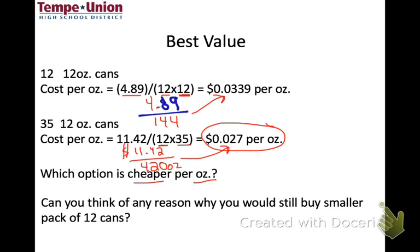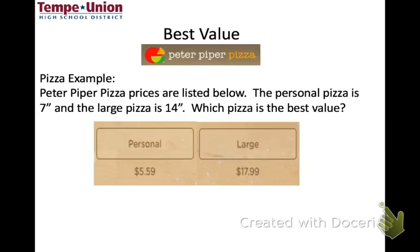Can you think of why you might still want to get the 12-pack? There could be a number of reasons — you might not have the storage space, you might not need that many right now, or you just might not have enough money to get the bigger pack, even though it's cheaper per ounce. The bigger one is a better deal, but there are valid reasons to choose the smaller one.